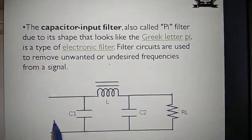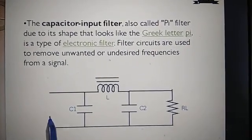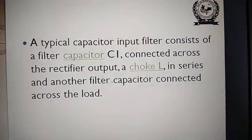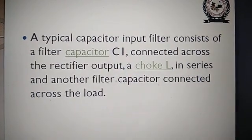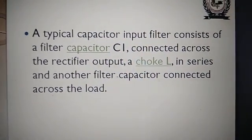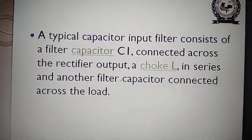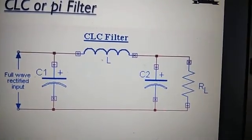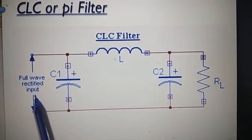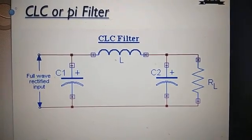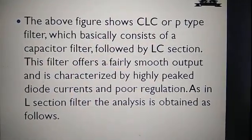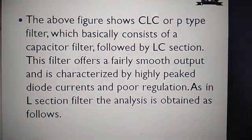At the input we apply the output of a full-wave rectifier — either a bridge rectifier or a center-tap rectifier. A typical capacitor input filter consists of a filter capacitor C1 connected across the rectifier output, a choke L in series, and another filter capacitor C2 connected across the load. The CLC or pi filter basically consists of a capacitor filter followed by an LC section.